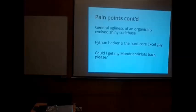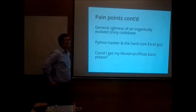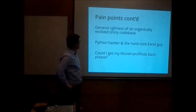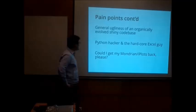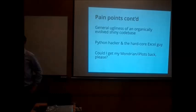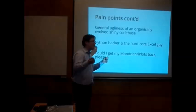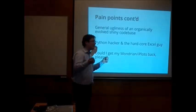A few more generic pain points: the general ugliness of an organically evolved Shiny or R code base. On the people side, the Python hacker and the hardcore C developer - it took much more time to convince them to be at least superficially happy about Shiny than it should have. And also, could I get my Mondrian interactivity back? When we talk about exploratory data analysis, selection and linked highlighting is rather hard to live without once you've experienced it. Some interaction is there in Shiny, but it's really not the same.